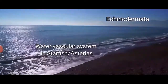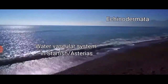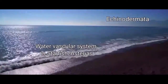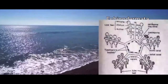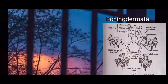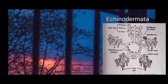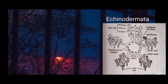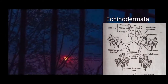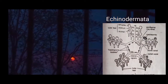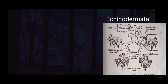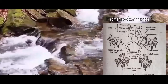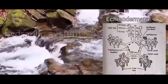Hello everyone. In this video session we'll be discussing the water vascular system in Echinodermata. It is a unique feature of the anatomy of all echinoderms, which helps mainly in locomotion. The water vascular system in echinoderms is a hydraulic system which pumps and pressurizes water.